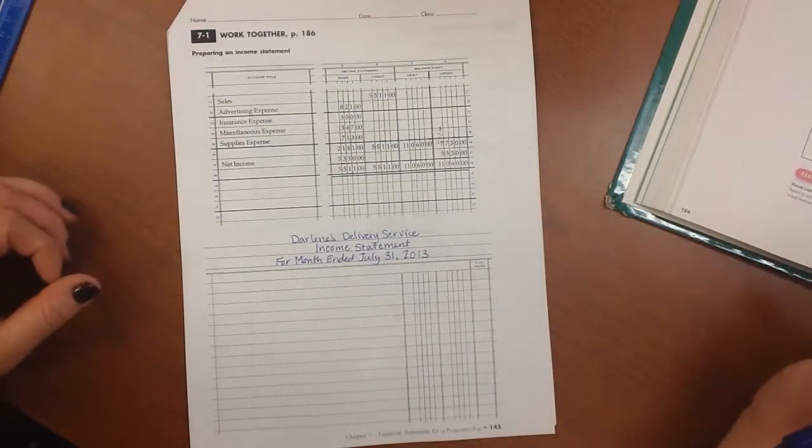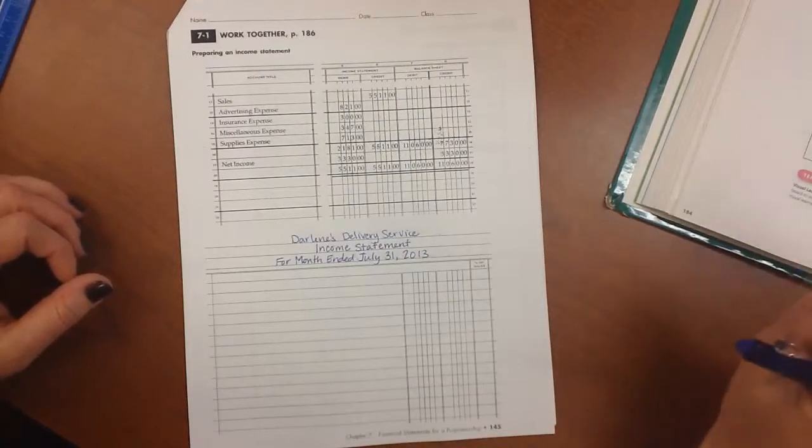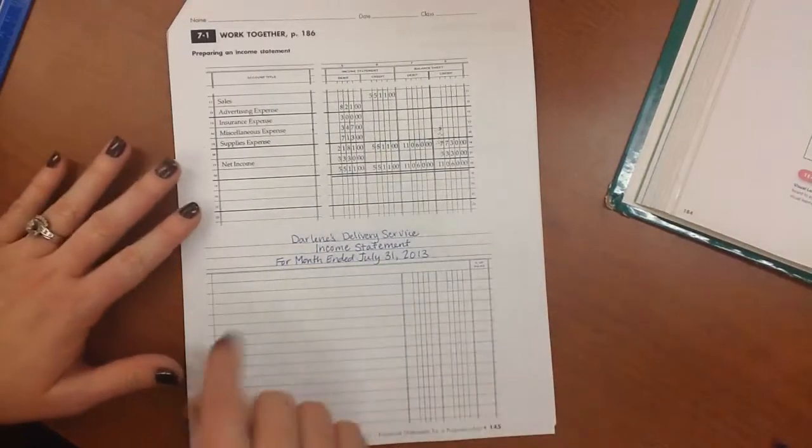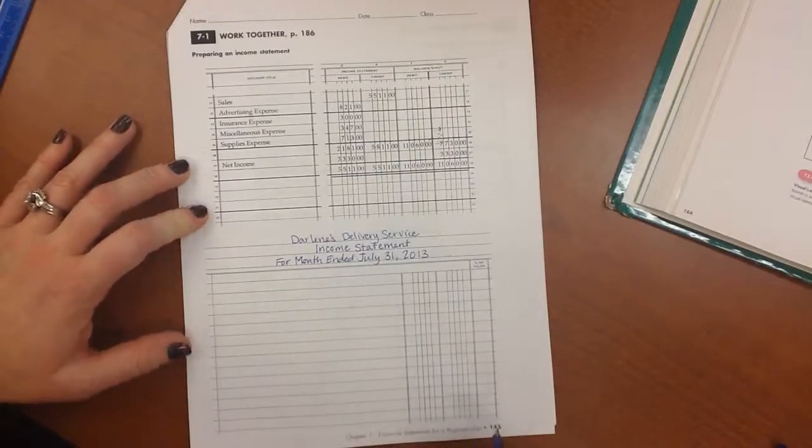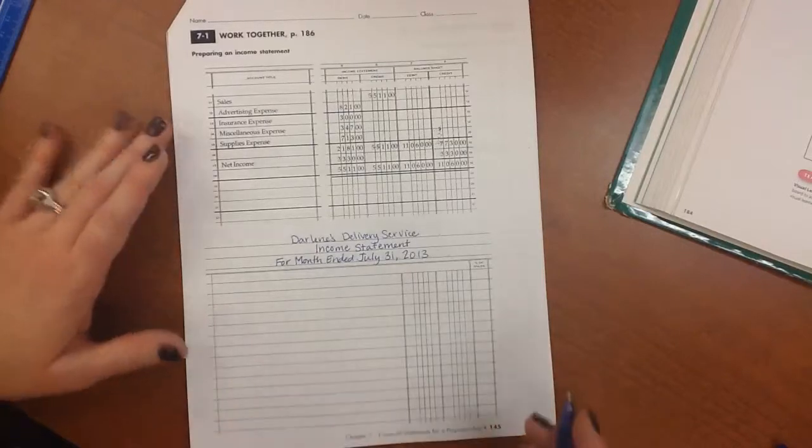Now our income statement is going to be split into two categories, but basically we have three sections. We have revenue, expenses, and then net income or net loss. Those titles are placed right against the margin of our income statement and then the information that goes under them is indented just a small bit.